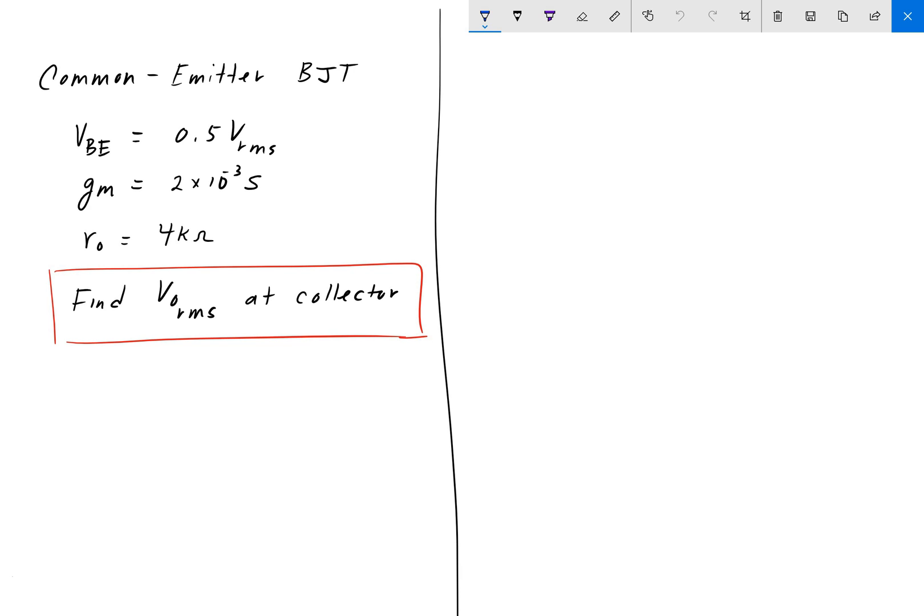Hey guys, welcome back to Engineering Education. For this next circuit, we have a BJT in the common emitter configuration, and we're asked to find what Vout is at the collector